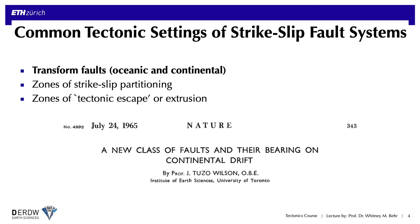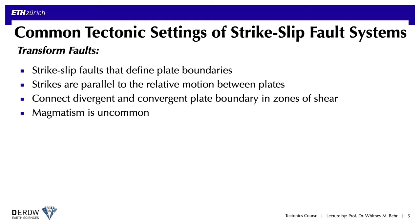Starting with transform faults — these were first recognized in 1965 by the now famous geologist Tuzo Wilson. He described transform faults as strike-slip faults that clearly define plate boundaries, with their strikes parallel to the relative motion between the plates on either side. Because they are themselves plate boundaries, they always connect divergent and convergent plate boundaries via zones of shear. Because there is little vertical motion or substantial heat advection associated with them, transforms only rarely show magmatism, in contrast to divergent and convergent plate boundaries.